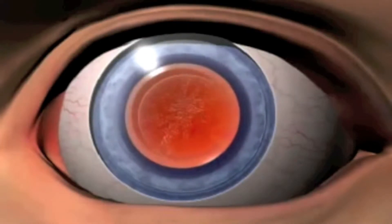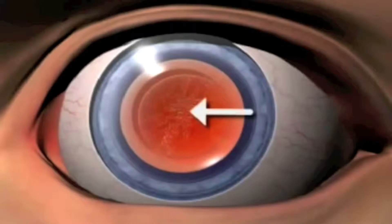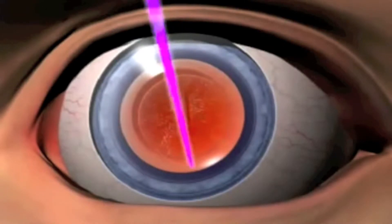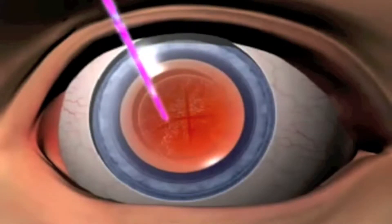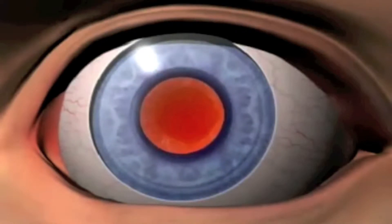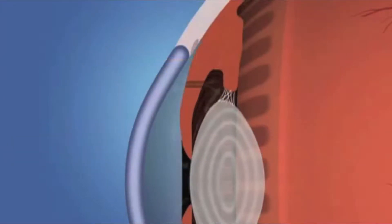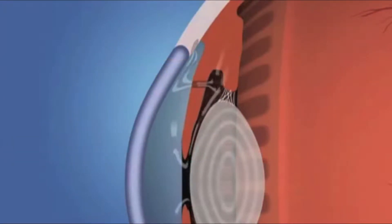This animation will recreate a capsulotomy using a YAG laser. The pupil is dilated to reveal a hazy capsule lying behind the intraocular lens, as shown by the pointer. The laser is applied in a specific sequence that clears the central visual axis. This is a painless procedure. A peripheral iridotomy uses a YAG laser to create a tunnel or passage through the iris. This hole will restore normal flow of fluid in a narrow-angled eye.